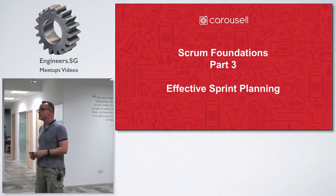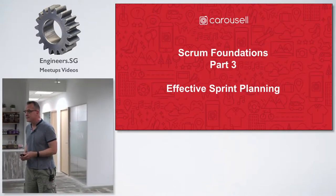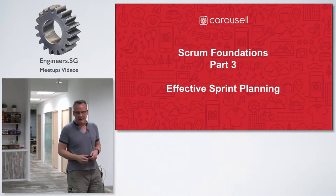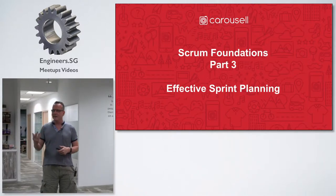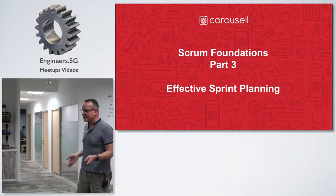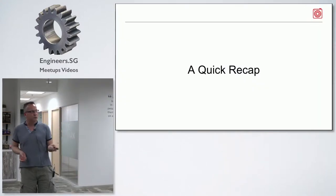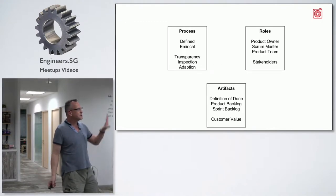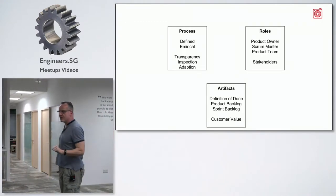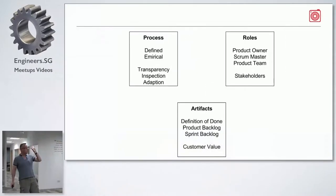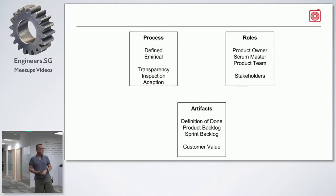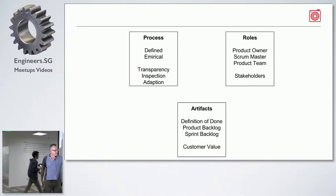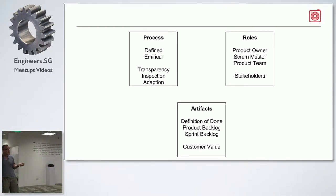Today we're going to Scrum Foundations Part Three in our Level Up series. We're going to be talking about effective sprint planning. Like all the sessions we've done so far, I'll do a short recap to hit some high points relevant to tonight's session. So, quick recap: there are three things we need to think about in Scrum — process, roles, and artifacts. Tonight we'll be touching on product backlog and sprint backlog.